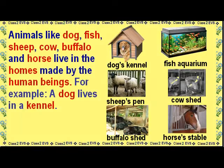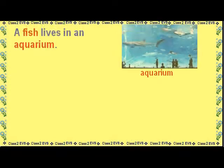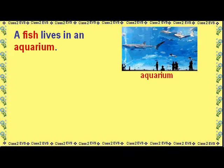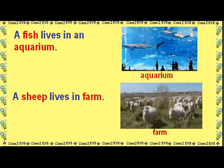Animals like dog, fish, sheep, cow, buffalo, and horse live in homes made by human beings. For example, a dog lives in a kennel. A fish lives in an aquarium. A sheep lives on a farm.